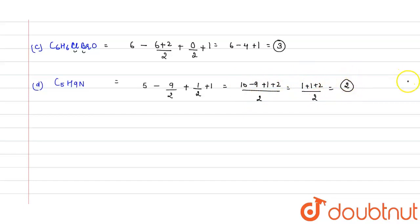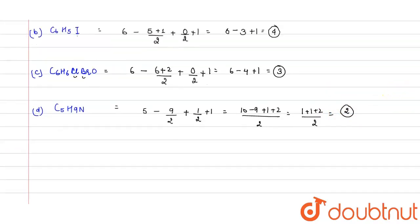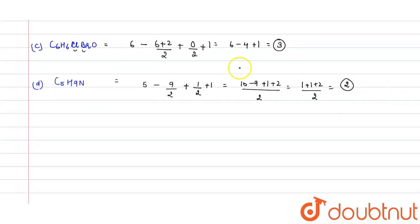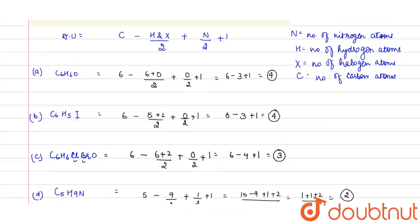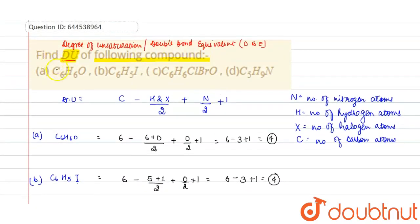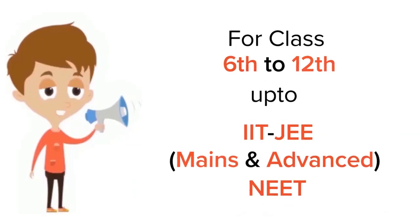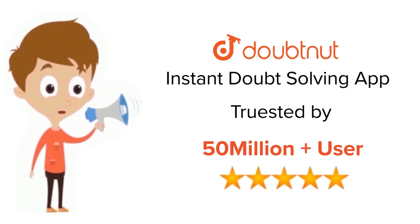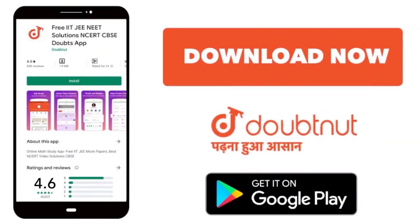So this is the whole explanation: compound A has degree of unsaturation four, B is four, C is three, and D is two. For class six to twelve, IIT JEE and NEET level, trusted by more than five crore students — download DoubtNet app today.